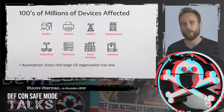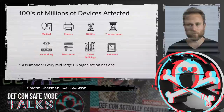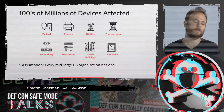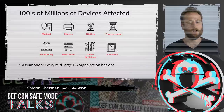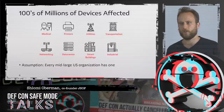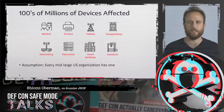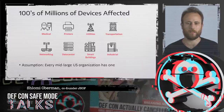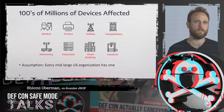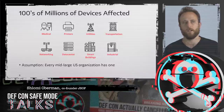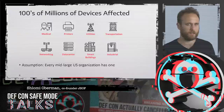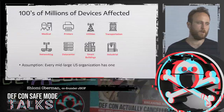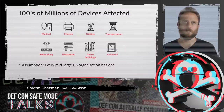Our current assumption, based on what we know — the suspected devices as well as the confirmed devices — we assume every medium to large organization in the U.S. has at least one vulnerable device. Some networks have many more, such as data centers or utility companies, but even any other organization might have an affected printer. A hospital might have affected IV pumps, etc.